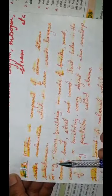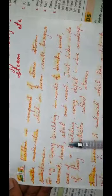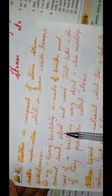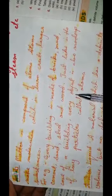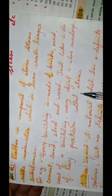For example, every building is made of bricks, mud, cement, sand, steel and wood. Just like in the case of a building, every object is also made up of tiny particles called atoms.